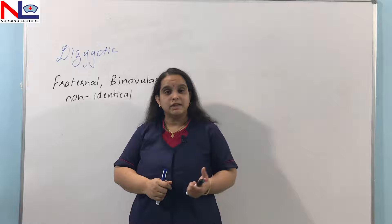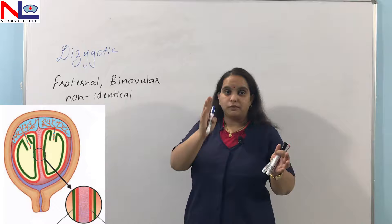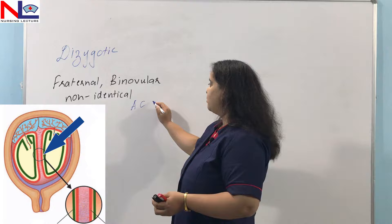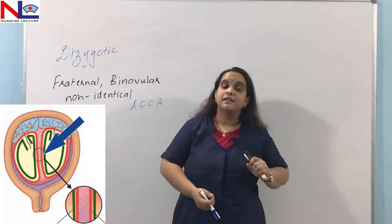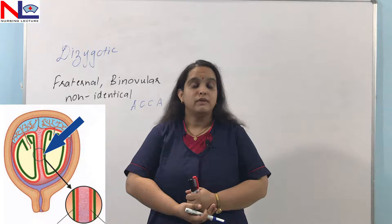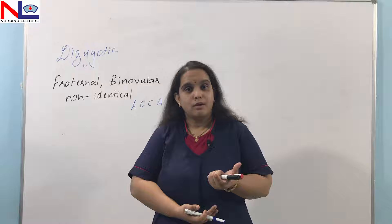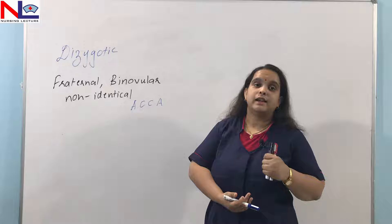In dizygotic twins, there are two placentae separating the fetuses with four intervening membranes: amnion, chorion, chorion, and amnion. A very important feature of this variety is that the sex of the babies may differ. In contrast, in monozygotic twins the sex is always the same.